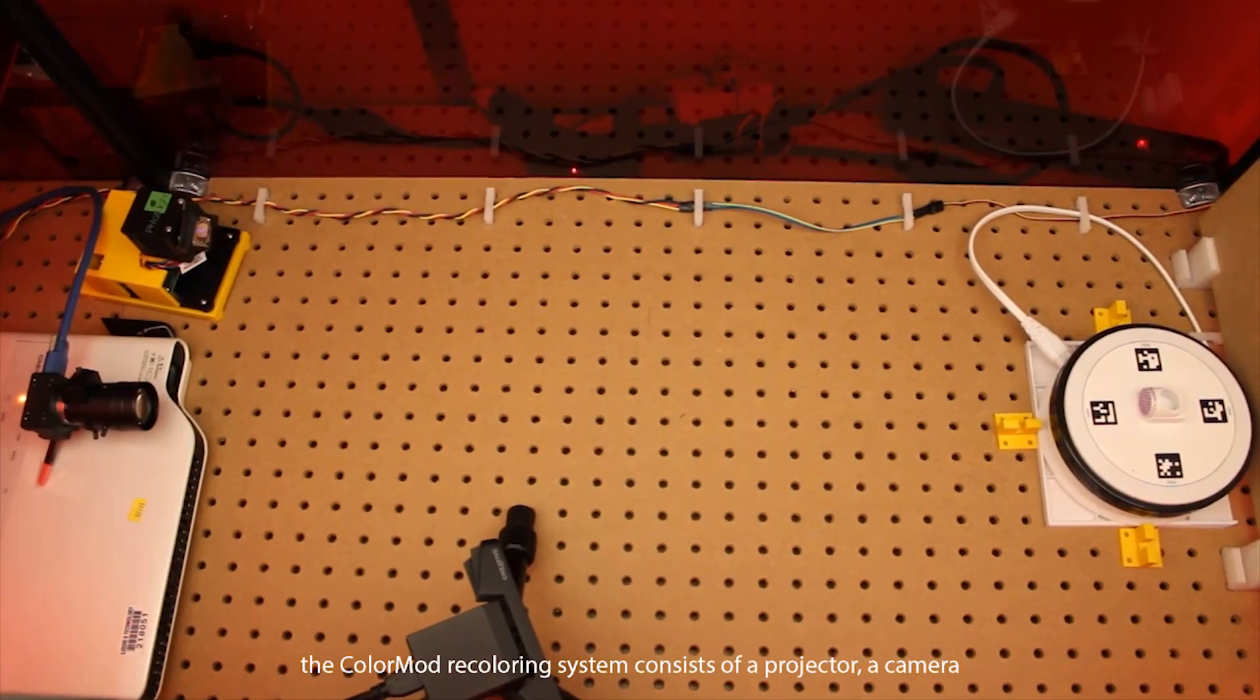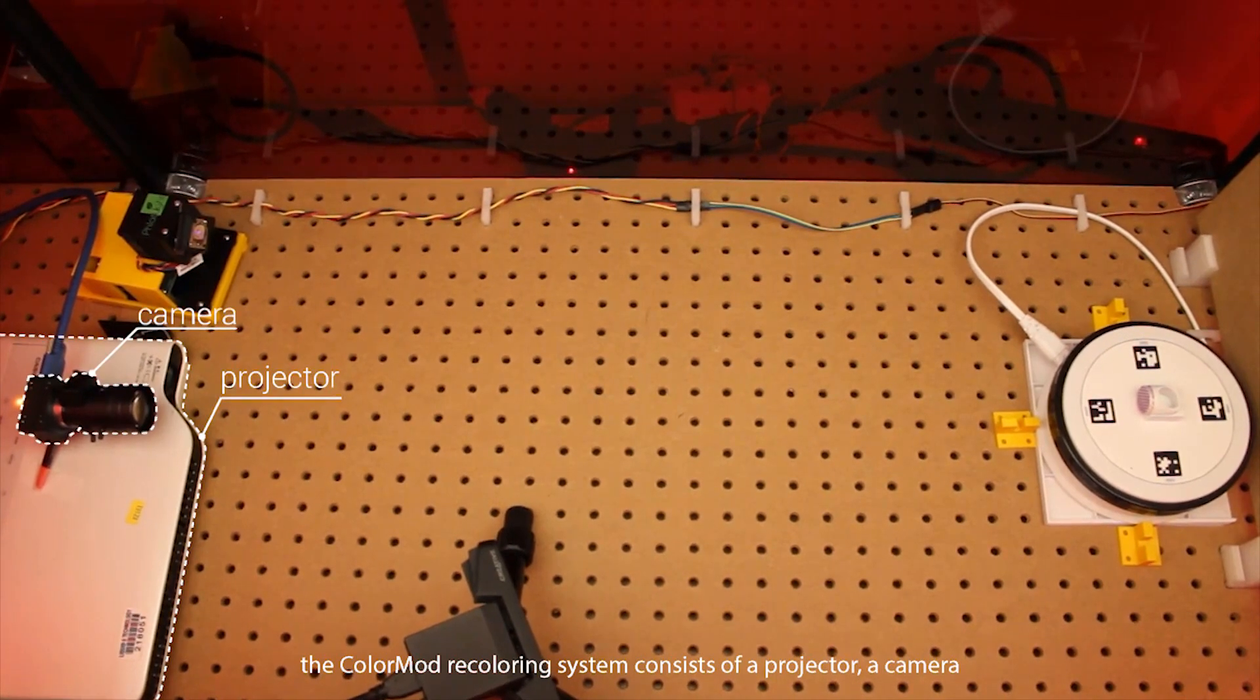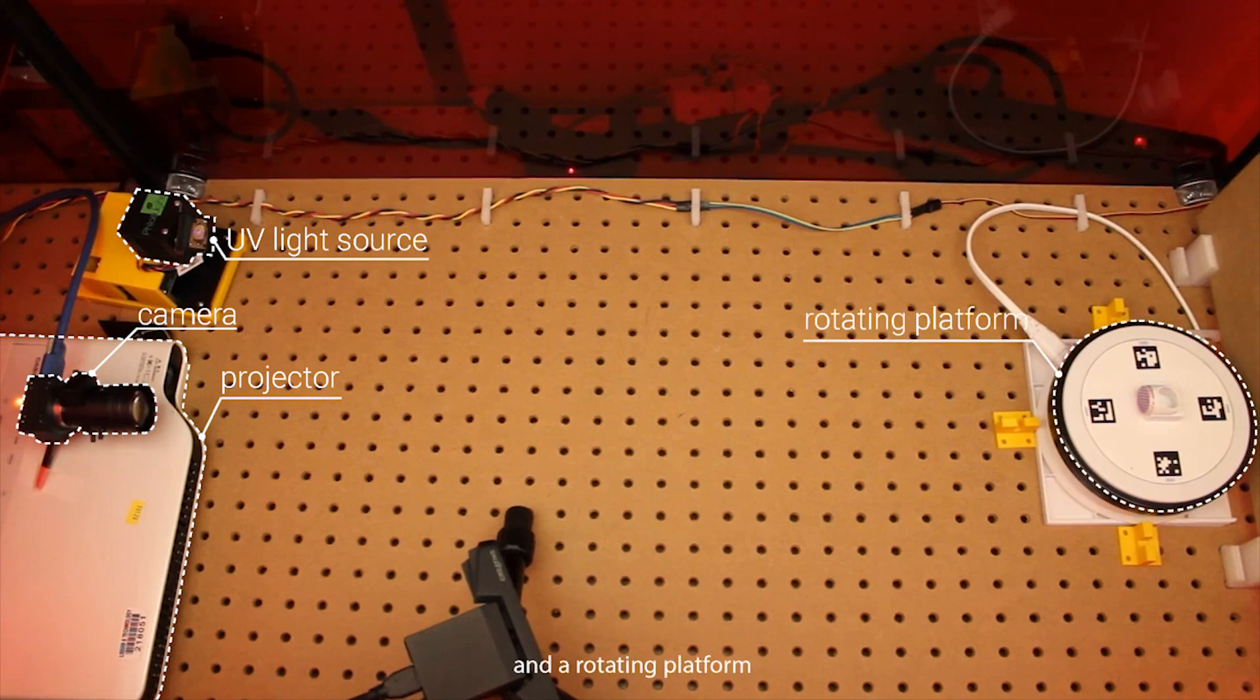The ColorMod recoloring system consists of a projector, a camera, a UV light source, and a rotating platform to recolor the object from all sides.